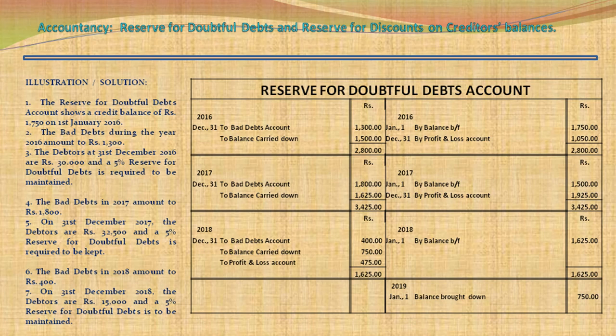The debtors at 31 December 2016 are Rs. 30,000 and 5% Reserve for Doubtful Debts is required to be maintained. 5% of Rs. 30,000 comes to Rs. 1,500, which will be recorded on the debit side as balance carried down Rs. 1,500. When we balance the account, there is a debit balance of Rs. 1,050. This is a loss towards reserve for Doubtful Debts, so this will be transferred to Profit & Loss Account by Profit & Loss Rs. 1,050, recorded on the debit side of the Profit & Loss Account.